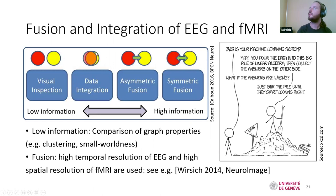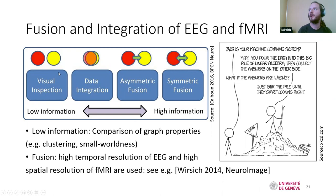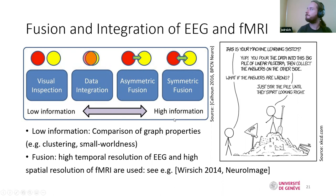This brings me to combining EEG and fMRI. Ideally, you want both the fast temporal resolution of EEG and the good spatial resolution of fMRI. You can start by visually inspecting and comparing the two, then overlay them. More complex applications involve asymmetric fusion—for example, using the fast sub-second information from EEG to inform your functional MRI or structural connectivity. This can give you a high level of complementary information.